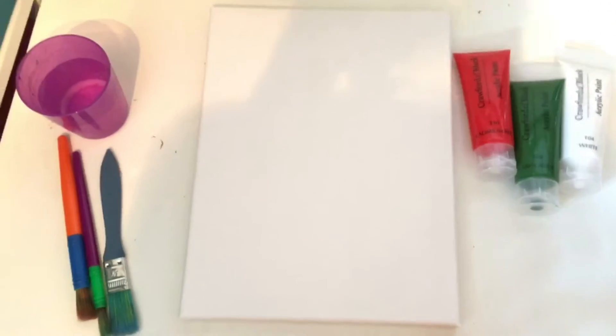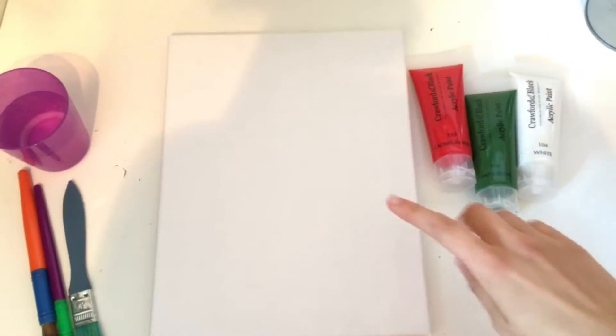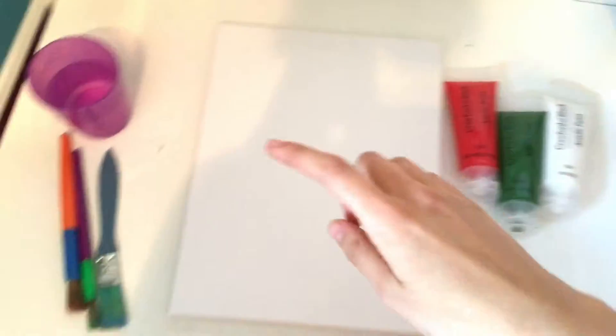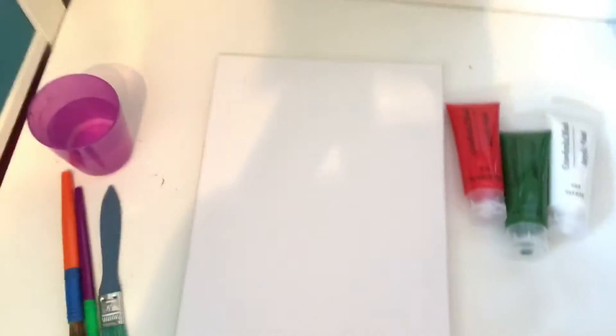To make this watermelon canvas project you need a canvas, some red, green and white paint, some paint brushes and some water.